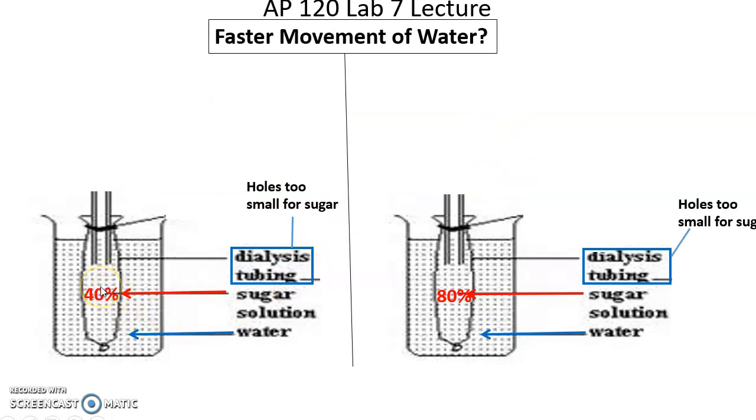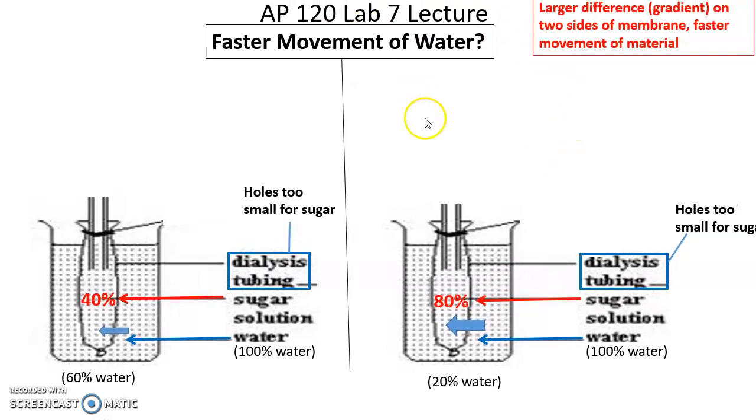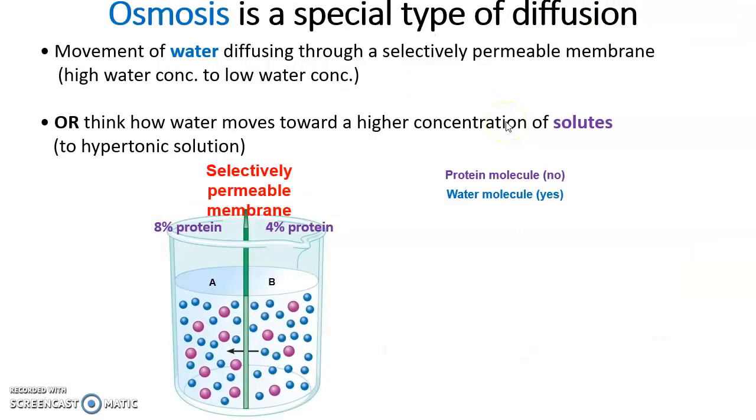For instance, here we have 40% sugar solution in the dialysis tubing, and that is in water. Over here we have 80% sugar solution in dialysis tubing, and that is in pure water. Holes are too small for sugar, so sugar cannot go through, but water can. Which direction will water move? Obviously it's going to move into the dialysis tubing. Now which one will go faster? Faster will be this one over here, the 80%. Because again, 0% in the water, 80% here. That is a steeper concentration gradient.